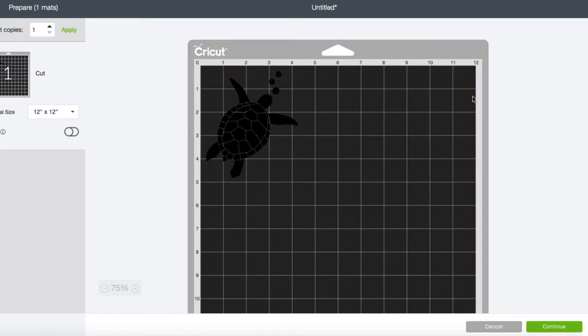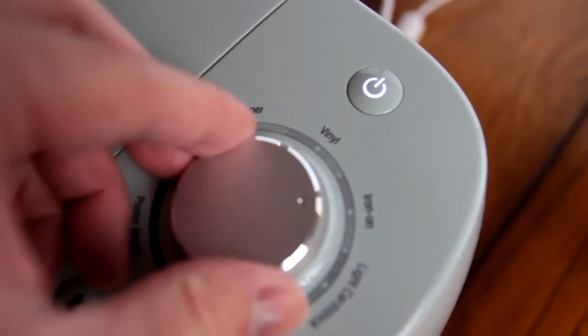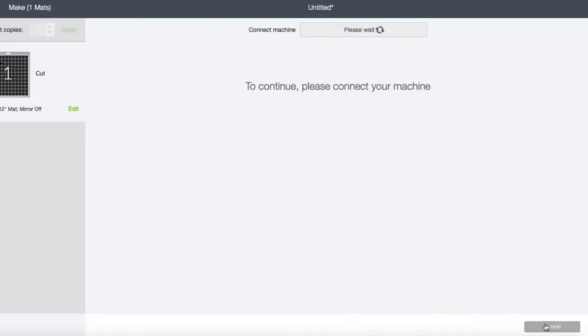Make sure everything looks good, and now we're going to turn on our Cricut and make sure that our cut dial is set to vinyl. Once we've done that we can press continue and then get our mat ready for the cutting process.